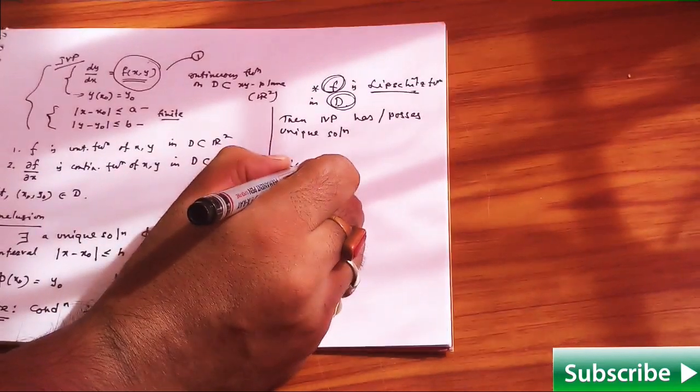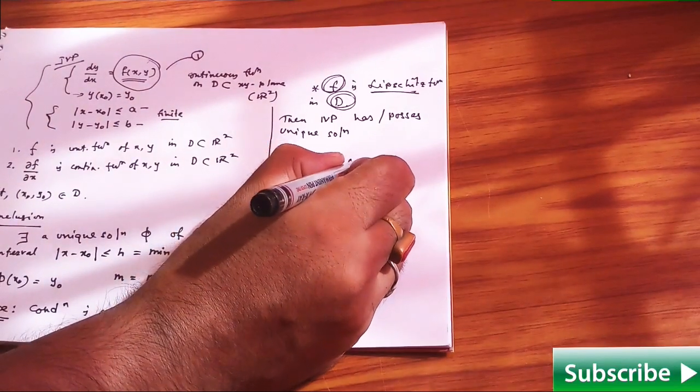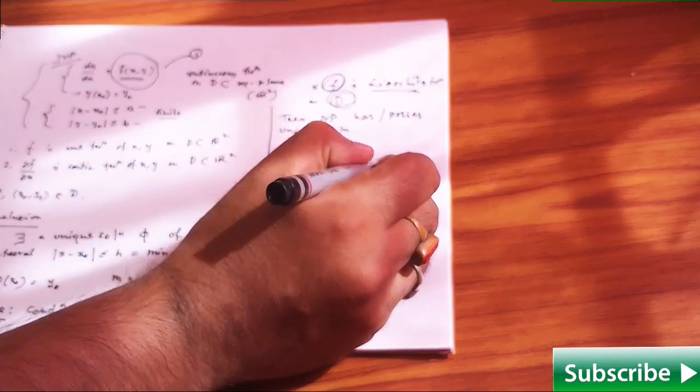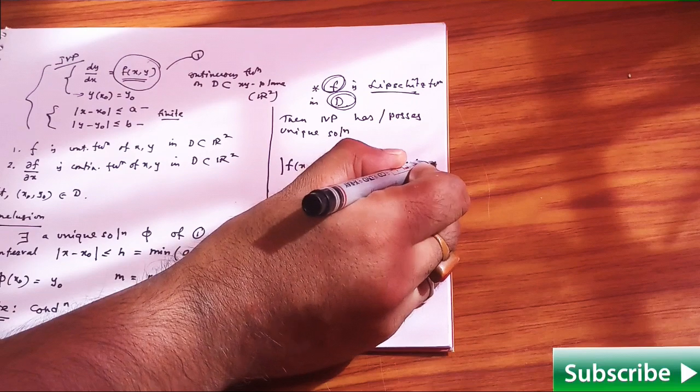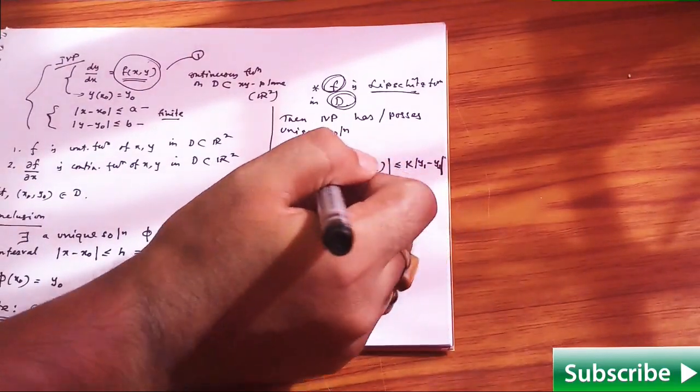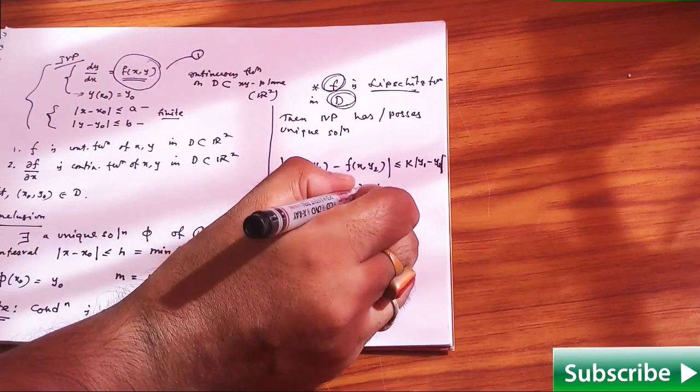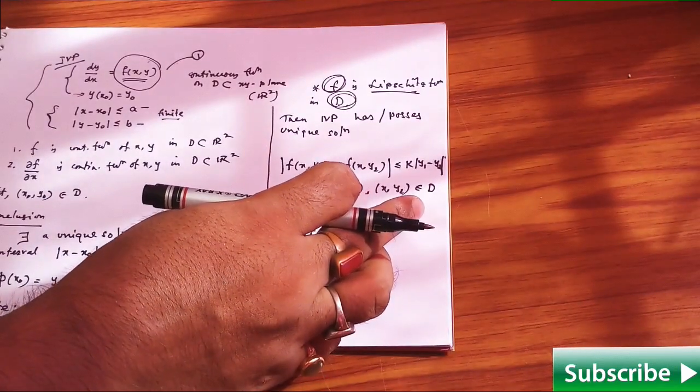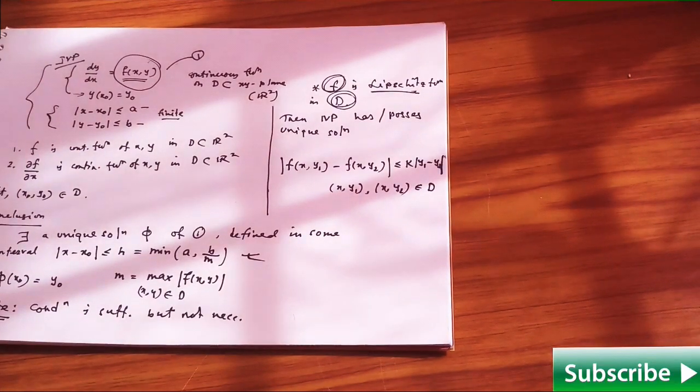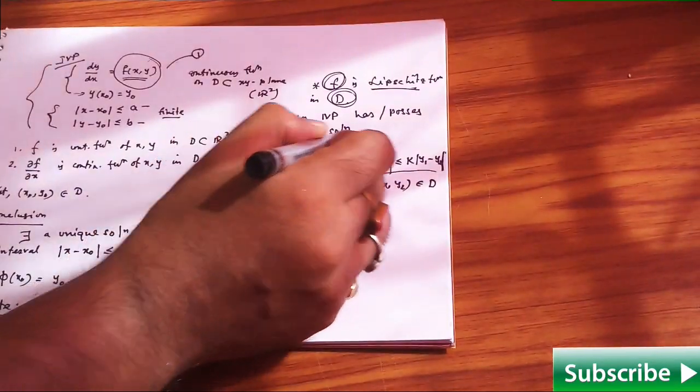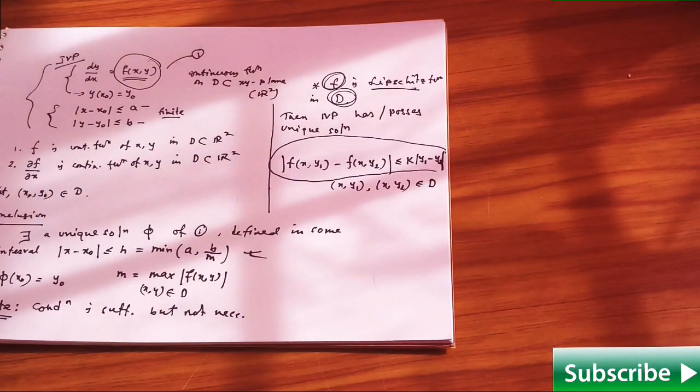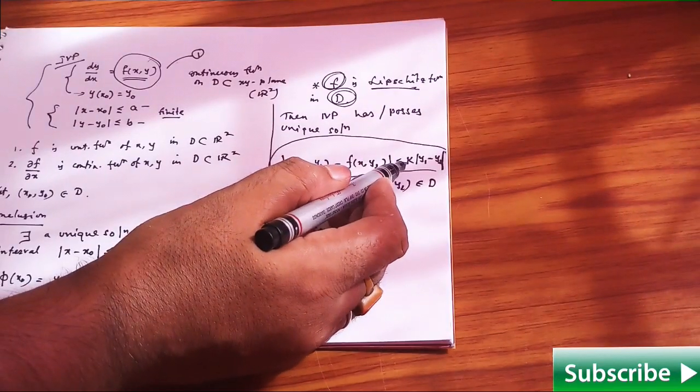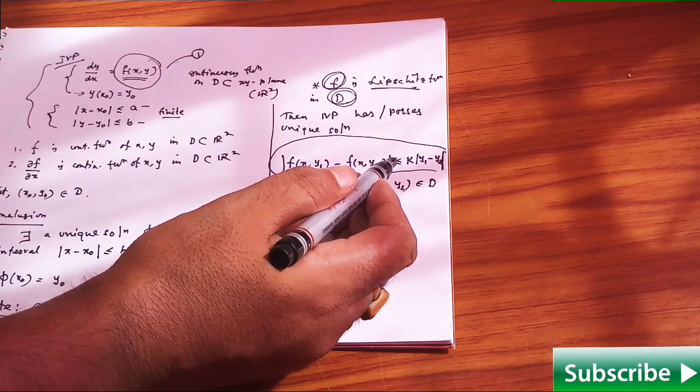If a function satisfies this relation: modulus of f(x, y1) minus f(x, y2) is less than or equal to k times modulus of y1 minus y2, where (x, y1) and (x, y2) are points taken from the considered domain, then you will say that your function f satisfies Lipschitz condition. This condition is your Lipschitz condition, where k is a constant called the Lipschitz constant.